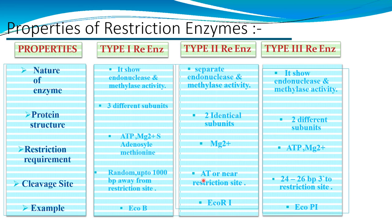Regarding cleavage sites: Type 1 cleaves randomly up to 1000 base pairs away from the restriction site. Type 2 cleaves at or near the recognition site — within the recognition sequence or close to it. Type 3 cleaves 24 to 26 base pairs 3-prime to the restriction site. Examples: EcoB for Type 1, EcoRI for Type 2, and EcoP1 for Type 3.